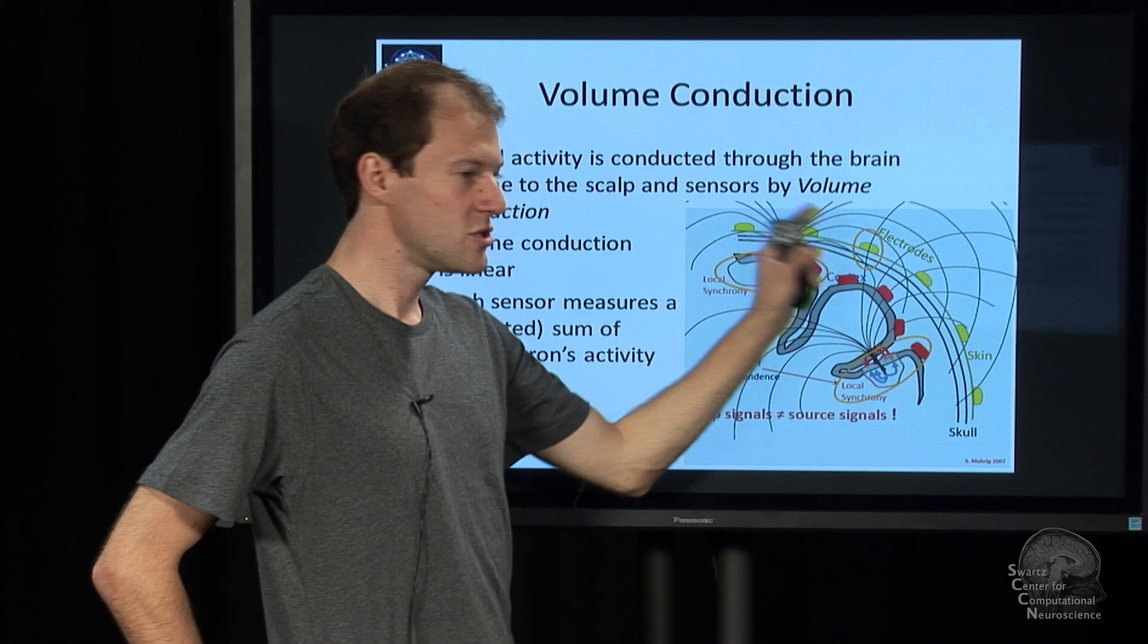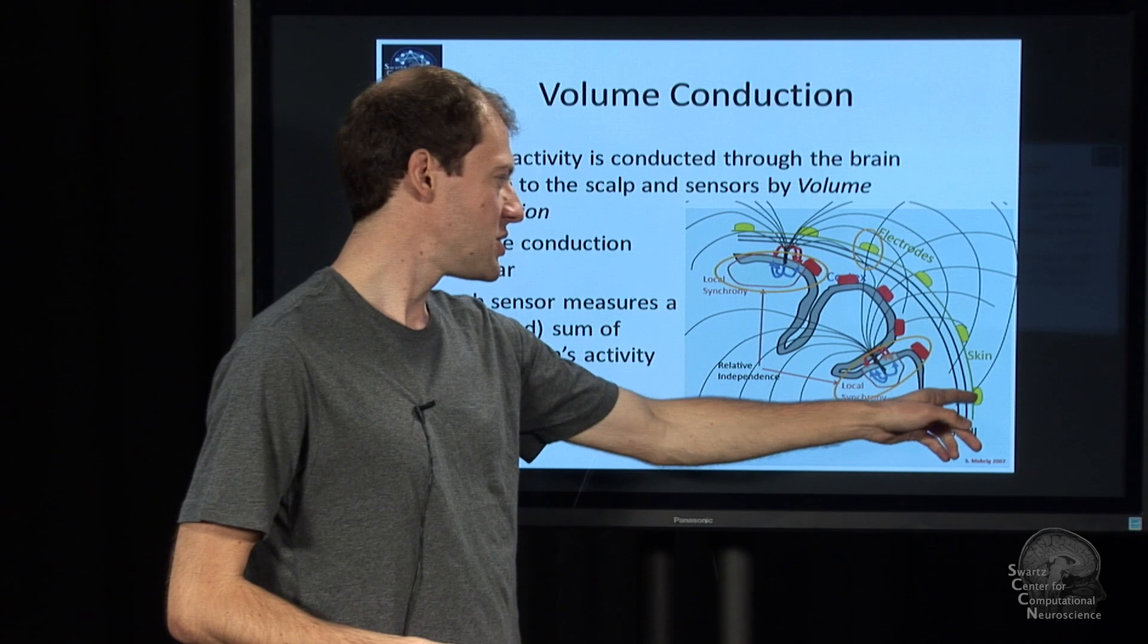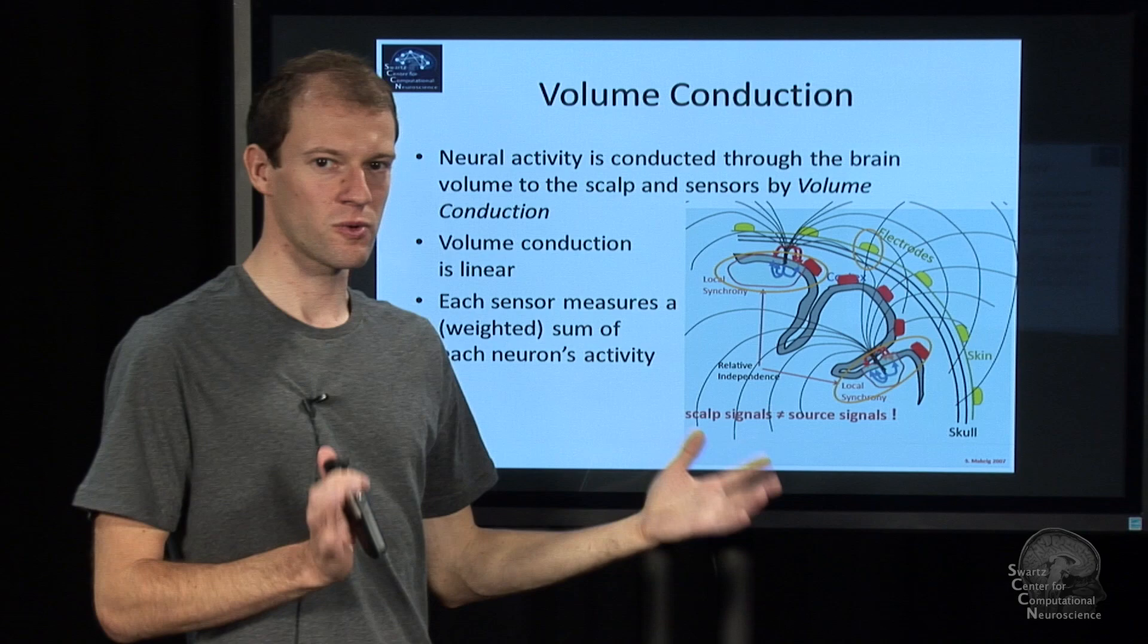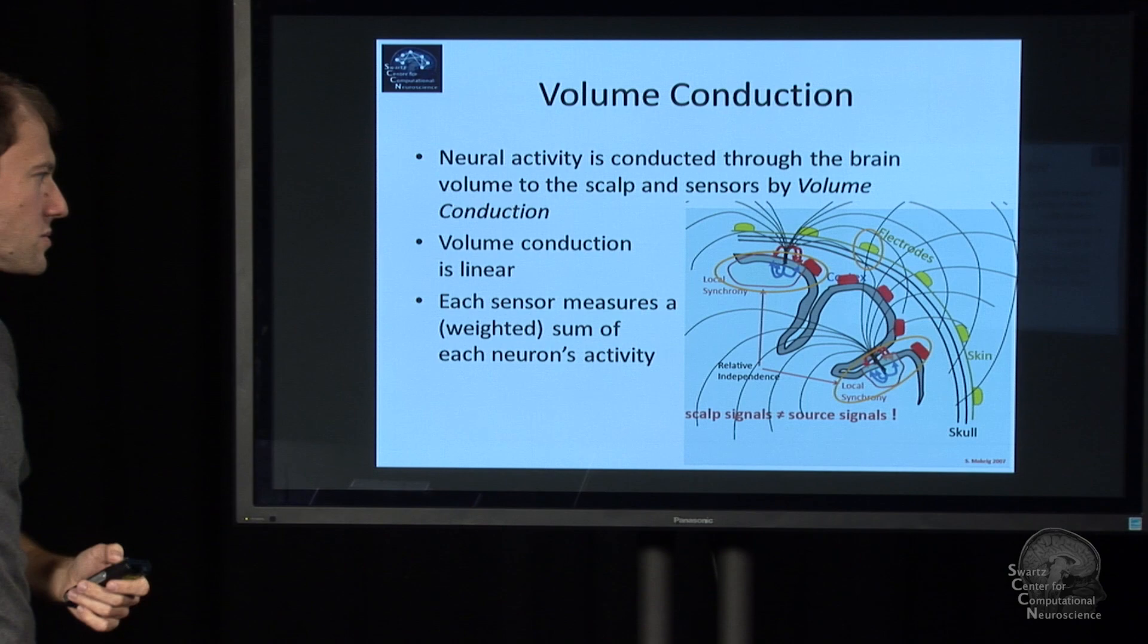This electrode might pick up a stronger signal from here than that, and these two are stronger than that, but it's a linear factor. And so each electrode picks up a weighted sum of the signals from everywhere in the brain. And it's our job to disentangle these things and combine what we see in the electrodes in the right way so that we can focus on what a particular part in the cortex is doing.